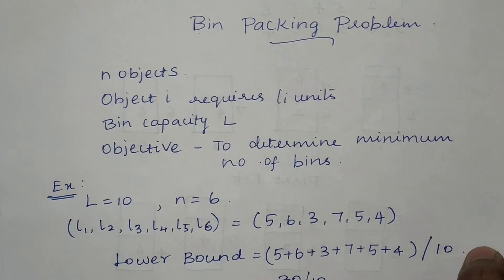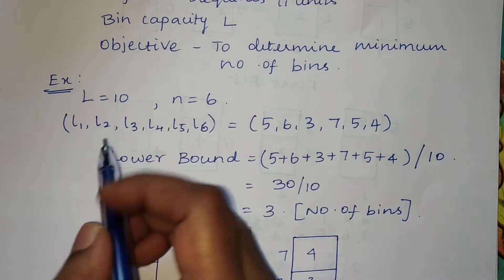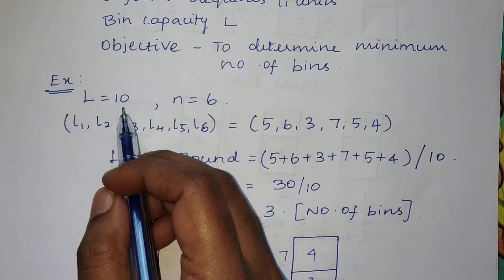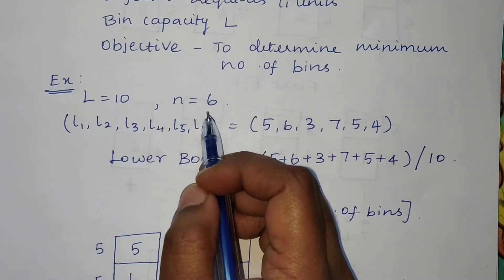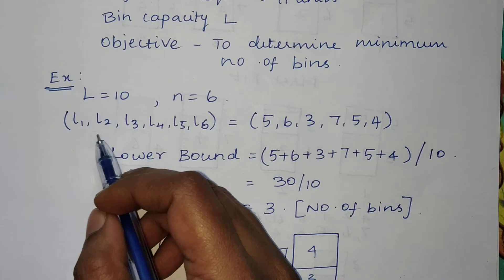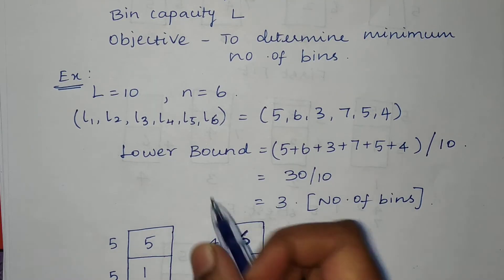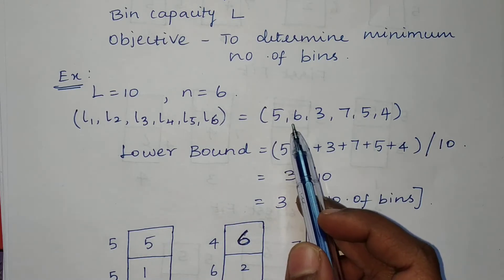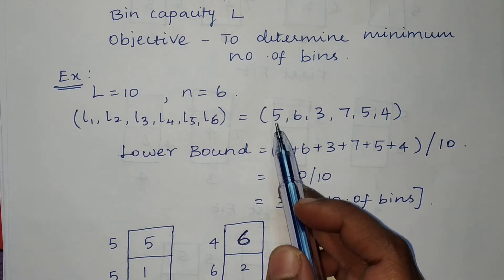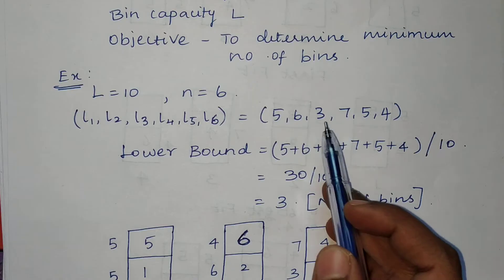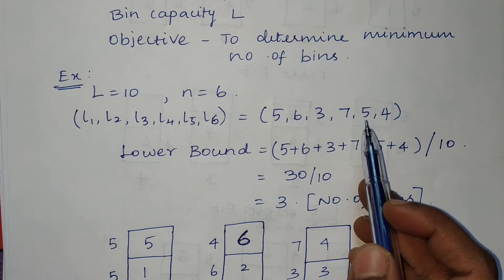Let's look at an example where the bin capacity l equals 10 and the number of objects n equals 6. Each object has its own weight, and the corresponding weights are given as 5, 6, 3, 7, 5, and 4 — so the first object's weight is 5, second is 6, third is 3, fourth is 7, fifth is 5, and sixth is 4.